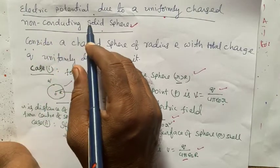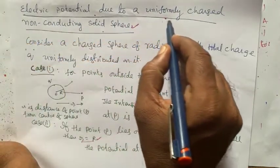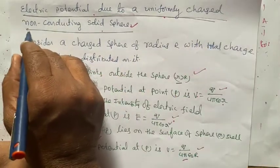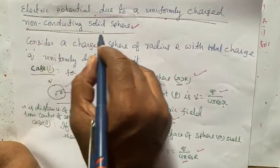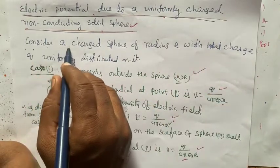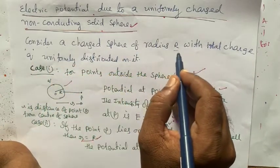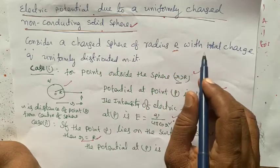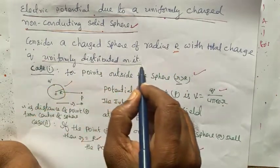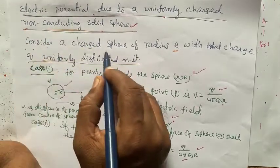Electric Potential Due to Uniformly Charged Non-Conducting Solid Sphere. Consider a non-conducting charged sphere of radius R with total charge Q uniformly distributed on it.